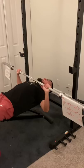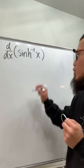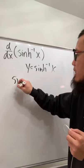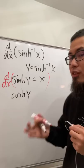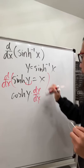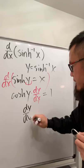Now let's find the derivative of inverse sinh(x). Set y = arcsinh(x), then take sinh of both sides: sinh(y) = x. Apply implicit differentiation with d/dx. The derivative of sinh is cosh, so we get cosh(y) · dy/dx = 1. Dividing both sides gives dy/dx = 1/cosh(y).